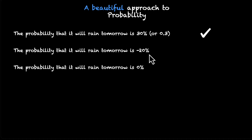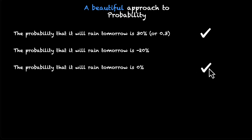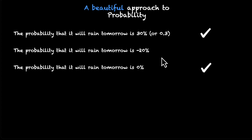The next one: the probability that it will rain tomorrow is minus 20%. And the last one: the probability that it will rain tomorrow is 0%. What does 0% mean? Well, 0% means it's definitely not going to happen — there is no chance it's going to rain tomorrow. It's sunny today, it was sunny yesterday, and it's basically one of the hottest days of the year. So 0% still makes sense. Can we go lower than 0%? We can't — 0 means it's not going to happen at all. You can't go lower than not happening at all. So minus 20% does not make sense.